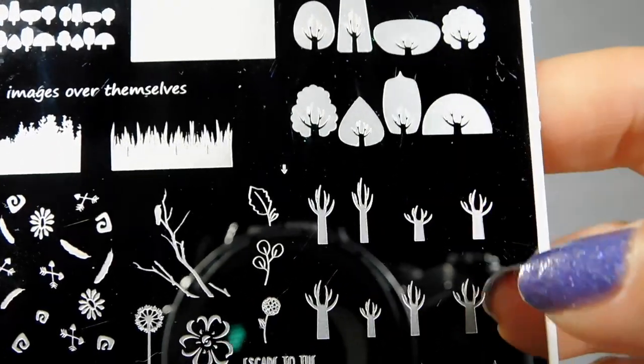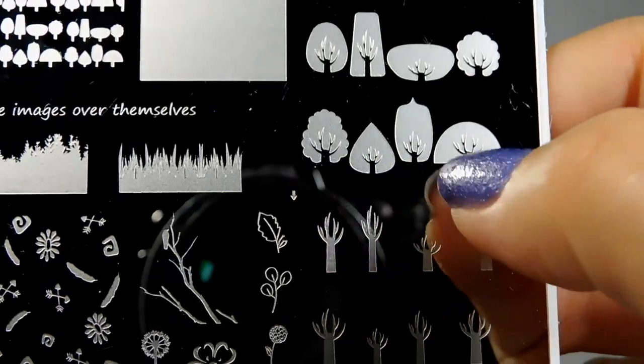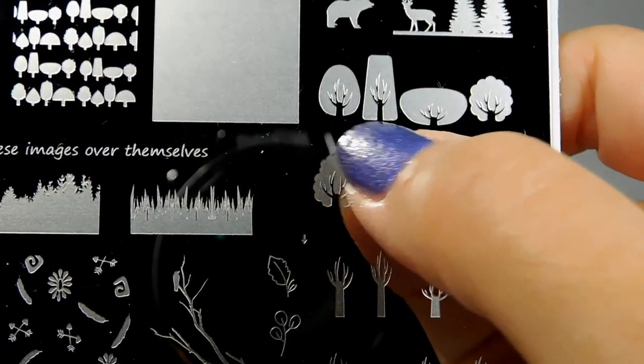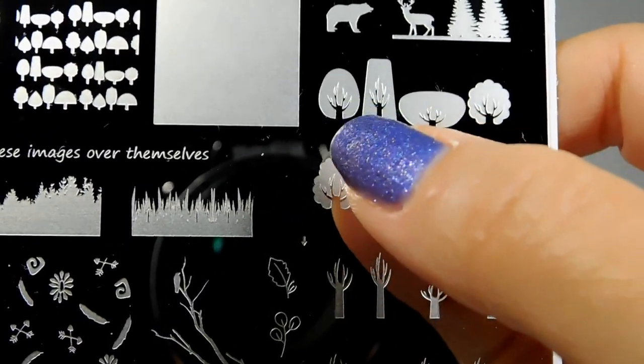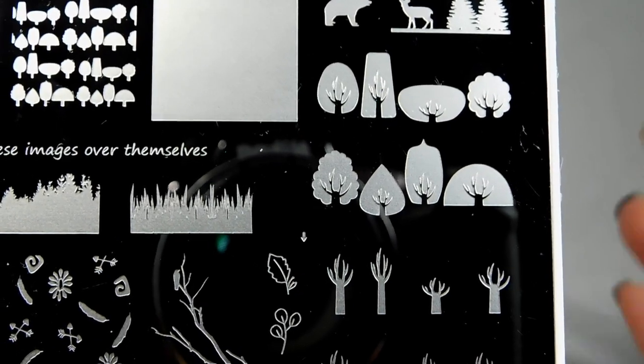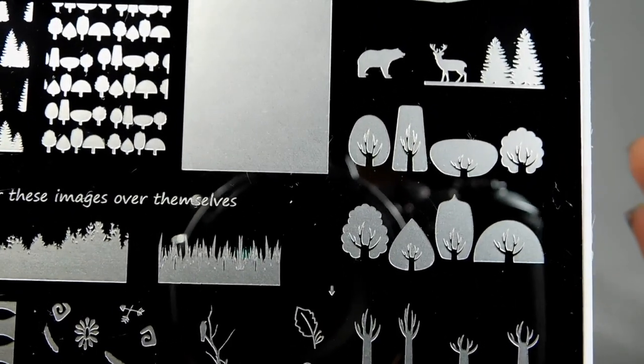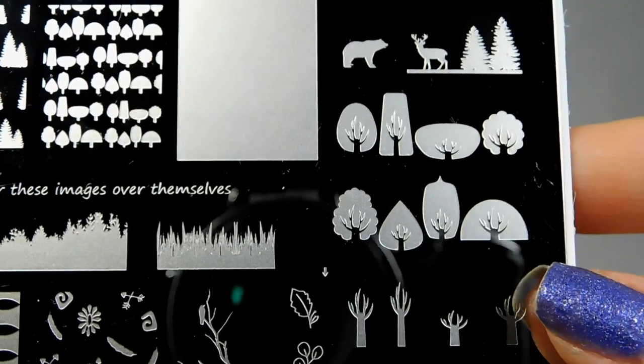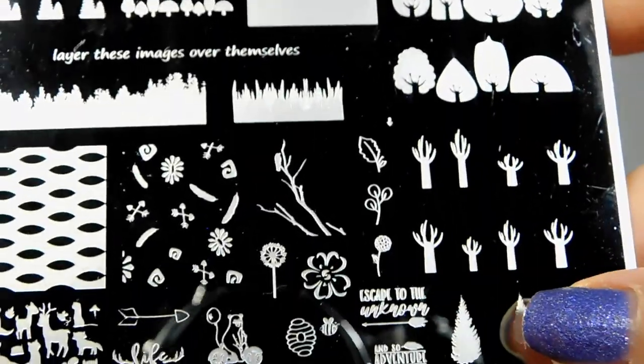Then that goes with these that I really love, which are layering images. These are the stems that go with that. They are all a little bit different, but you can stamp these in different colors. You can do different shades of green, but you could do pinks and yellows and have all kinds of fun looks for different times of the year.